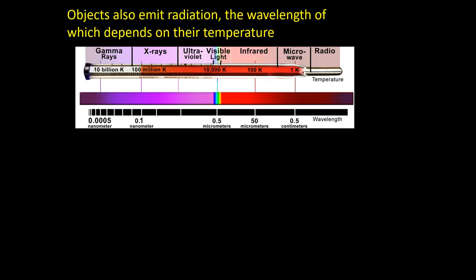In addition to electromagnetic radiation emitted by things like radio transmitters or x-ray machines or UV lamps, all objects emit electromagnetic radiation as a result of their temperature.